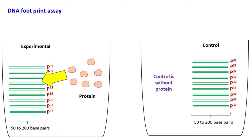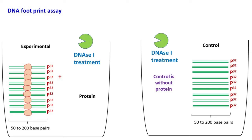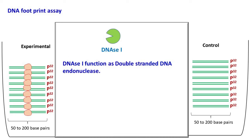Now in the experimental system, once the protein binds the DNA, the system is treated with the enzyme named DNase I. DNase I is an enzyme that functions as a double stranded DNA endonuclease. It binds to the minor groove of DNA and cleaves the phosphodiester bond.